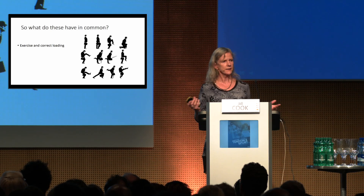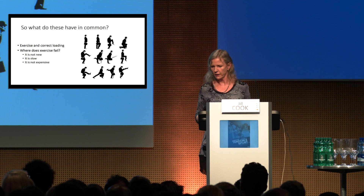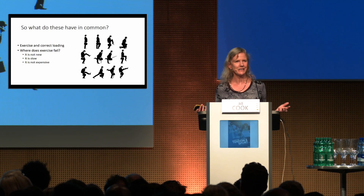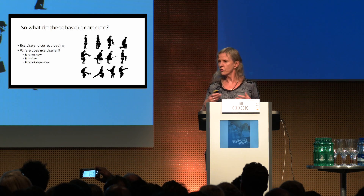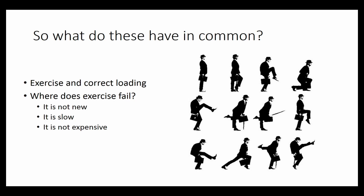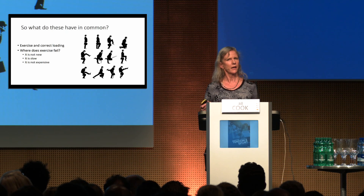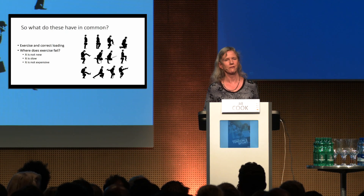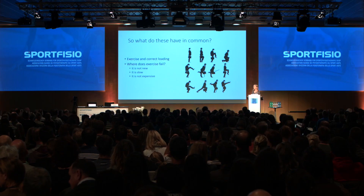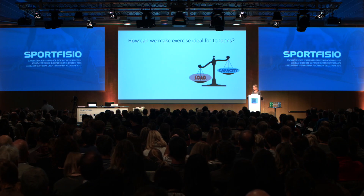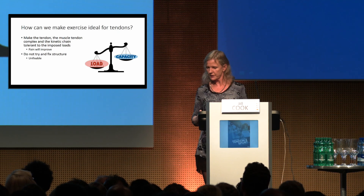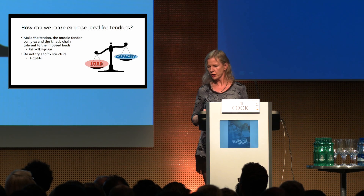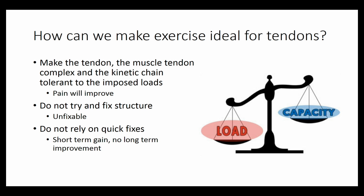What these protocols have in common is exercise and correct loading — and that's what we need to be doing. Why can't we get patients to adhere to exercise programs? Because we've been telling them for years to exercise. It takes time, and exercise is not expensive. I think if we charged $1,000 per exercise, we would get much more adherence because people expect expensive treatments to have an effect. How do we make exercise ideal for tendons? We make the muscle-tendon complex and the kinetic chain tolerant to our loads so pain will improve. We don't try to change structure, and we don't rely on quick fixes because we get short-term gain and no long-term outcomes.